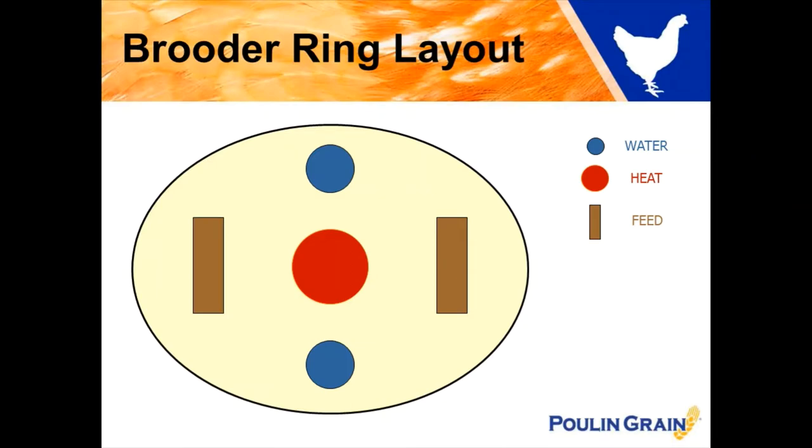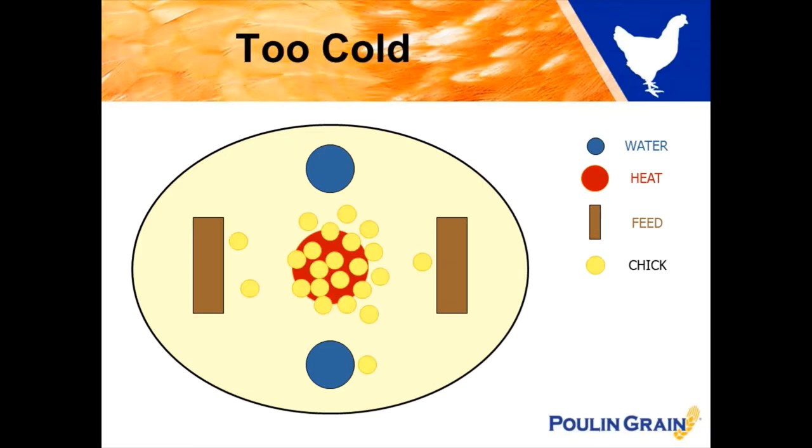Here's your brooder set up. Here you have your waters and your feeders, and then the red circle is the indicator of the heat source. These little yellow circles are representations of your baby chicks.